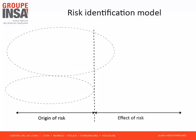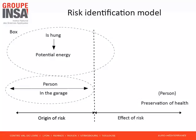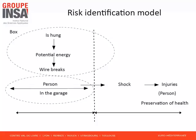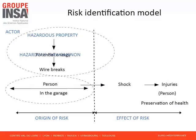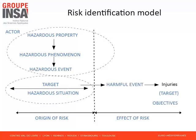Now the introduced risk identification model can be summarized. The box is hung — this property assigns potential energy to the box. Our objective is the preservation of people's health. If a person enters the garage, he or she is in a hazardous situation. If the wire breaks, a shock may occur, and this shock may lead to injuries. We have modeled the risk that we identified. This example uses a generic model whose features are: the box is the actor; 'the box is hung' specifies the hazardous property; this hazardous property assigns the hazardous phenomenon — potential energy — to the actor; the person is the target; being in the garage, the person is in a hazardous situation; the objective is to preserve health; the breaking of the wire constitutes a hazardous event; the shock is a harmful event; and it leads to harms.